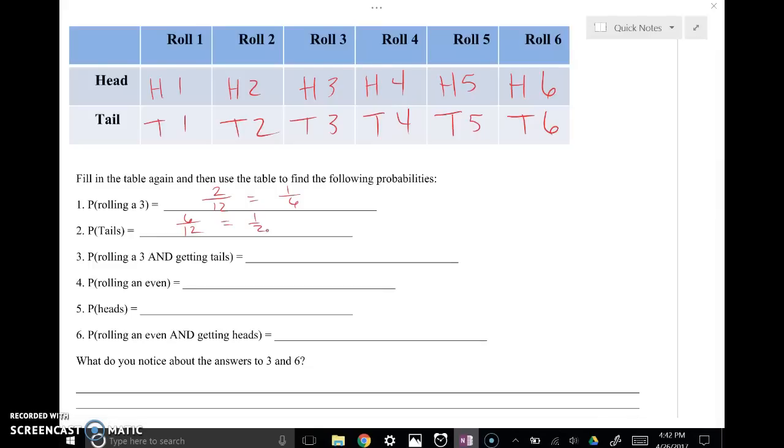What's the probability of rolling a 3 and getting tails? So that means these two things have to happen at the same time. Well, there's the one situation where I get tails and a 3. So that's the 1 out of the total 12 scenarios that are possible. All right,